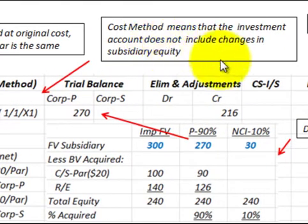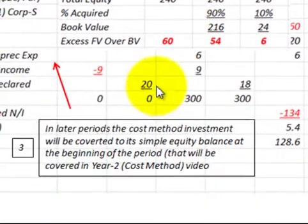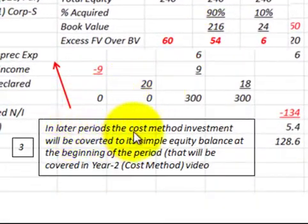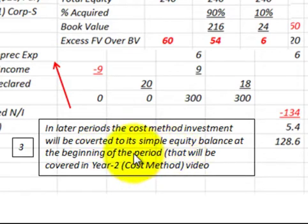Using the cost method means that the investment account does not include changes in our subsidiary equity. In later periods, this cost method investment will be converted to a simple equity balance at the beginning of the period — and that will be covered in a year two cost method video.